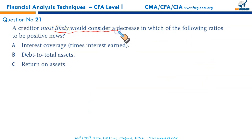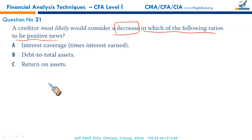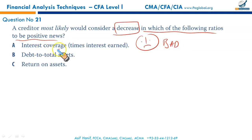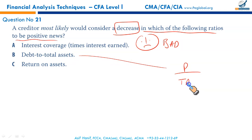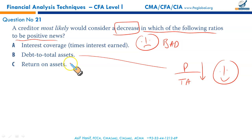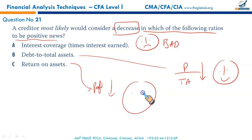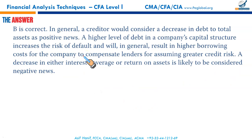A creditor would most likely consider a decrease in which ratio to be positive news? A decrease in interest coverage would be a cause of concern — negative for the creditor. A decrease in return on assets is a profitability measure and is also viewed negatively. A decrease in debt-to-total-assets means solvency is improving — a good sign for the creditor. B is the right answer.